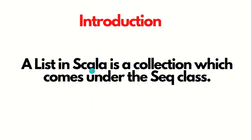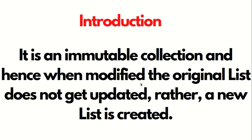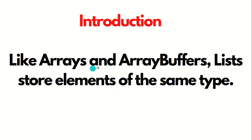List in Scala is a collection which comes under the Sequence class, so it is similar to Array and ArrayBuffer because both these two collections have the same definition. The difference between Array, ArrayBuffer and List is that List is an immutable collection, and hence when modified the returned list doesn't get updated — rather a new list is created. The similarity is that like Arrays and ArrayBuffer, List stores elements of the same type, meaning homogeneous data will be stored in a List.